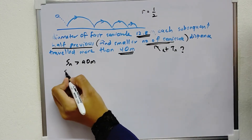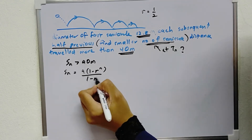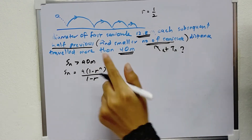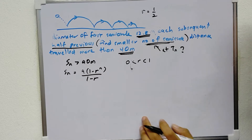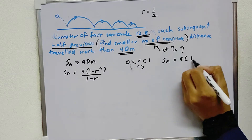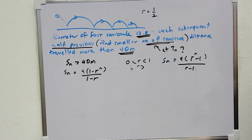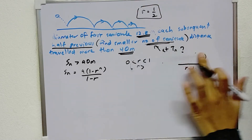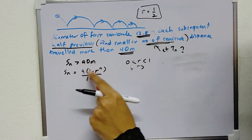So Sn is equal to the formula: A times (1 minus R^n) over (1 minus R). Since R is equal to half, which is between 0 and 1, we use this formula. If R were larger than 1, we would use Sn = A(R^n minus 1) over (R minus 1). But since R is equal to half, we will use the first formula.